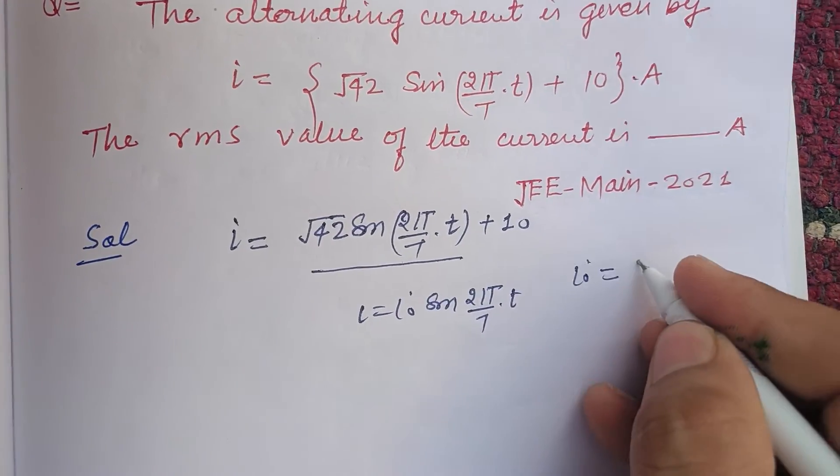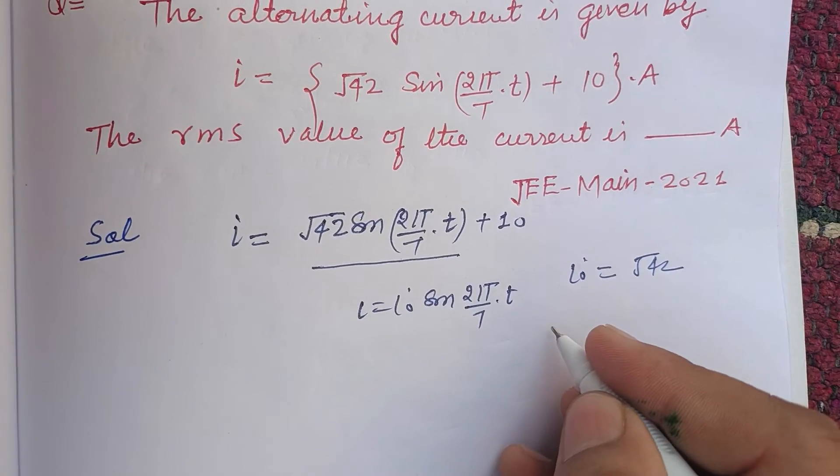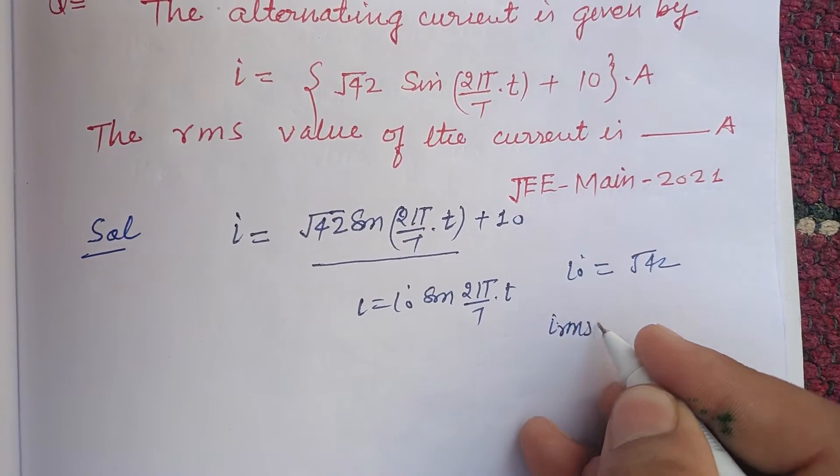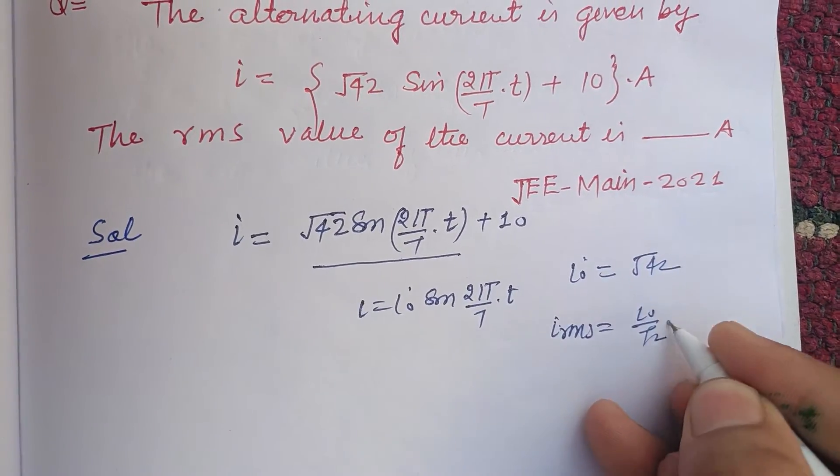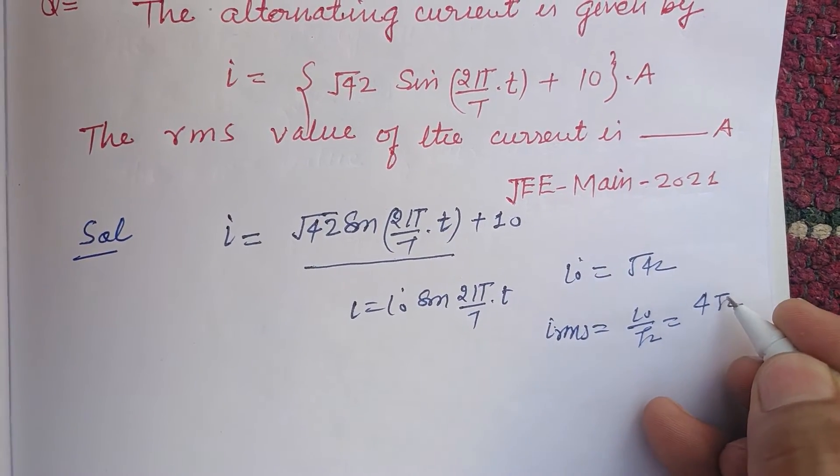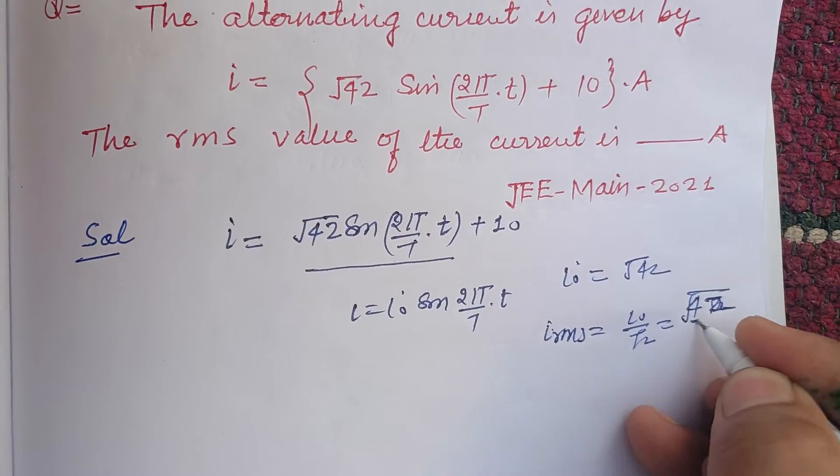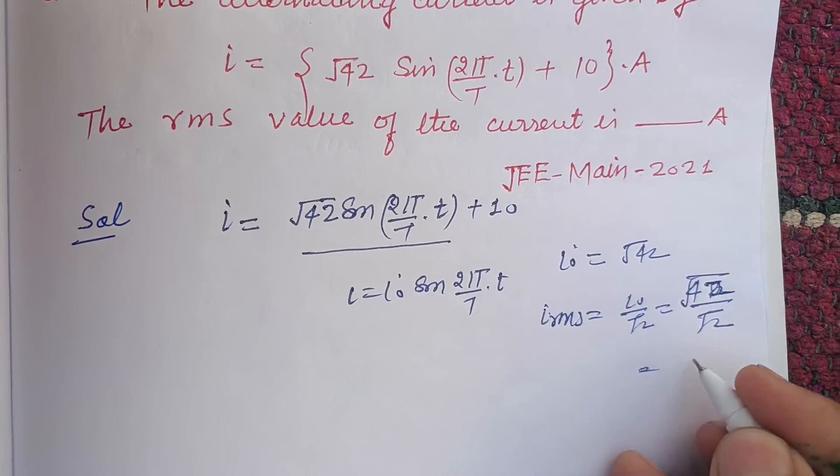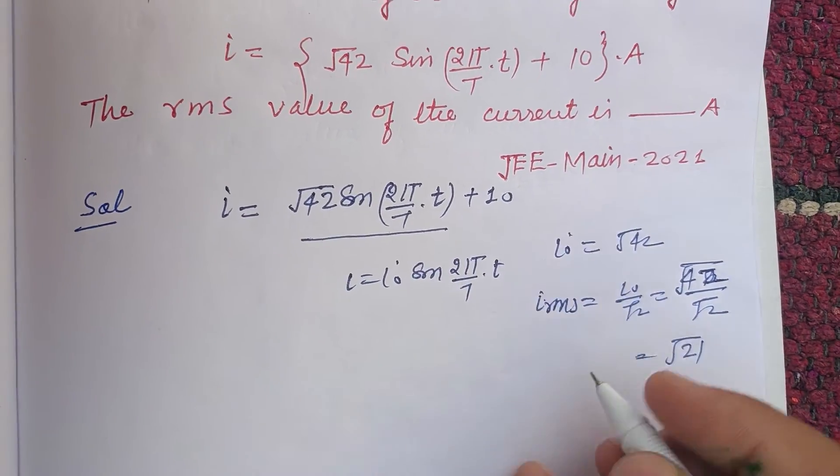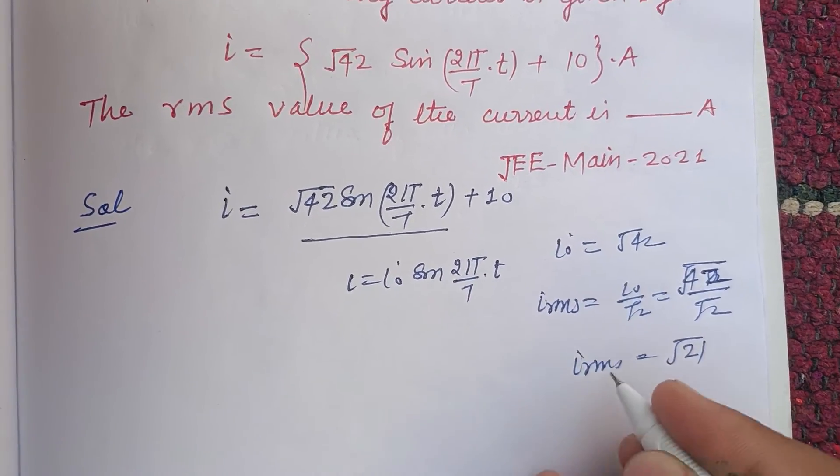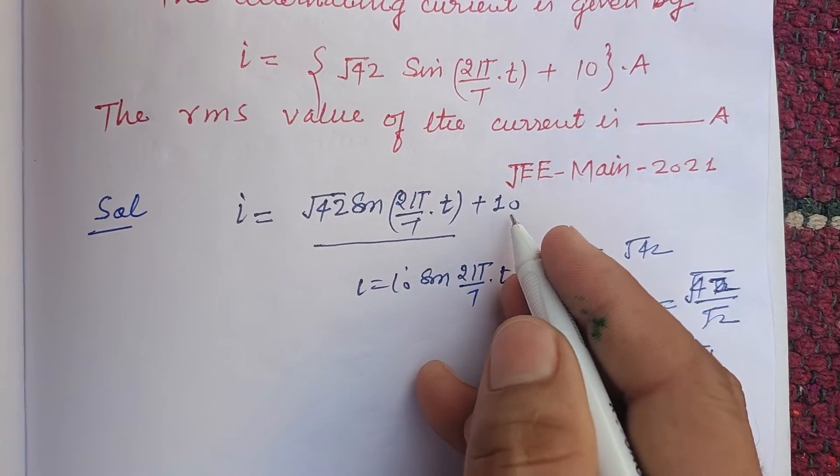So i₀ is given as √42, and you know that i_rms = i₀/√2. So this is √42/√2, which equals √21. This is i_rms1.